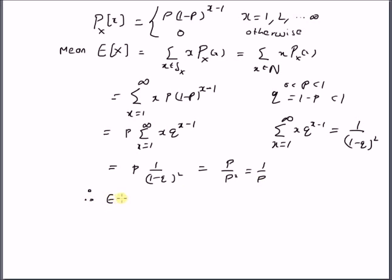Therefore, the expected value of a geometric discrete random variable is equal to 1/p.